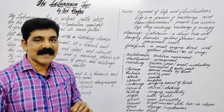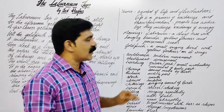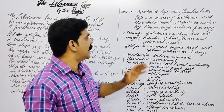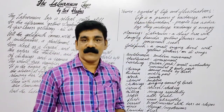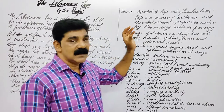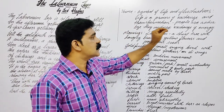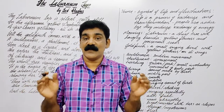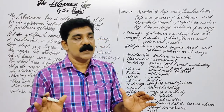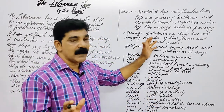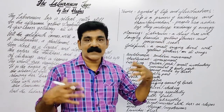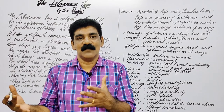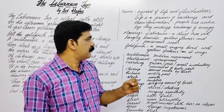Ted Hughes was an English poet. Before going to the poem, let us see what is the theme of the poem. This poem symbolizes life and its fluctuations — or we can say life is a process of exchange and transformation. People are active because they undergo exchange of energy; when we exchange energy, we become active. That's the theme of the poem.